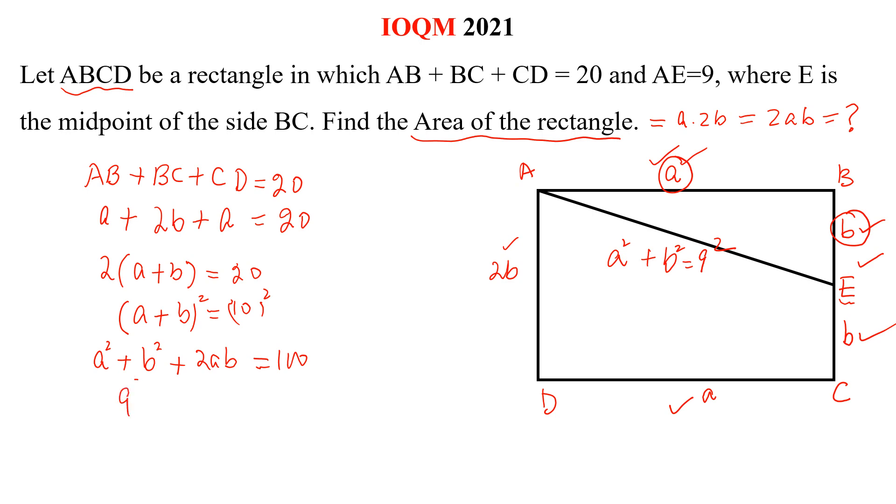This is 9 square plus 2AB is equal to 100. And 2AB is equal to 100 minus 9 square is 81. 2AB is equal to 19.